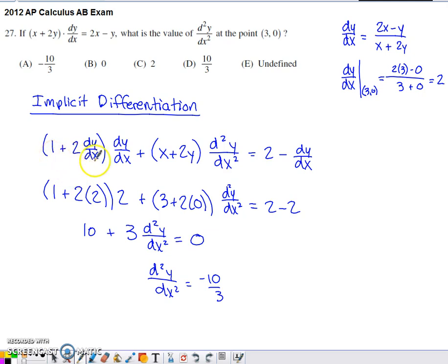So I'm doing the derivative of the first piece of the product, the derivative of this x plus 2y term. Derivative of x plus 2 times the derivative of y with respect to x times the original second piece of the product. Add on to that the original first piece of the product. And then the derivative of the second piece of the product is going to be where our second derivative comes into play. On the other side, I do the derivative of 2x, I subtract off the derivative of y, and I have a line right here that involves my second derivative.